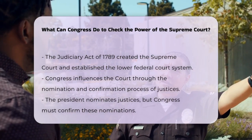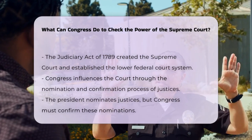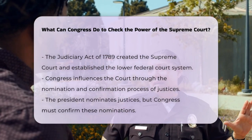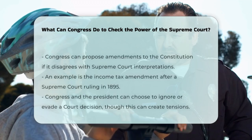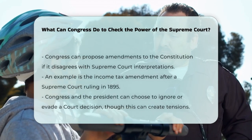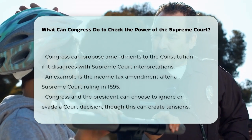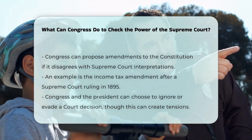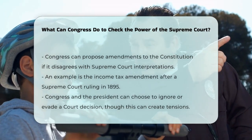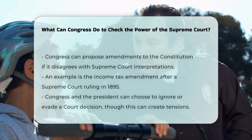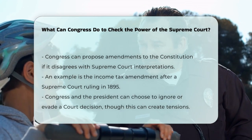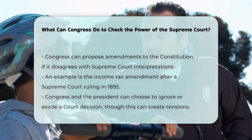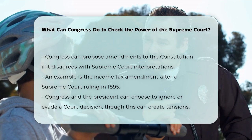If Congress feels strongly that the Supreme Court is misinterpreting the Constitution, it can propose amendments to the Constitution. For example, if the Supreme Court rules against a law that Congress believes is necessary, Congress can work towards adding an amendment to make that law constitutional. This happened with the Income Tax Amendment after the Supreme Court ruled against an income tax law in 1895.